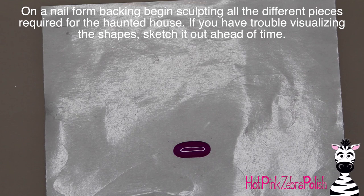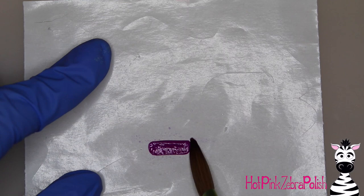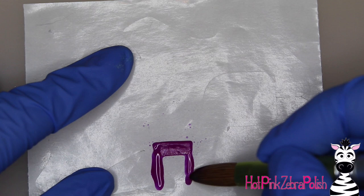And now on a nail form backing, and I filed that nail into shape, by the way, but on a nail form backing, I'm going to begin sculpting all the different pieces of my haunted house. This is a multi-level, multi-section haunted house, so there are a lot of different pieces to it. It also is multiply 4D, and because of that, there's just a lot of little pieces to make.